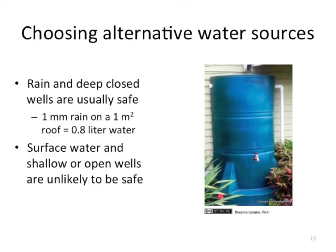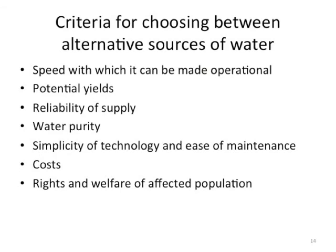Criteria for choosing between alternative water sources include: the speed with which the source can be made operational, potential yields, reliability of supply, water purity, simplicity of technology and ease of maintenance, appropriateness of the technology to the affected communities, costs, and the rights and welfare of the affected population.